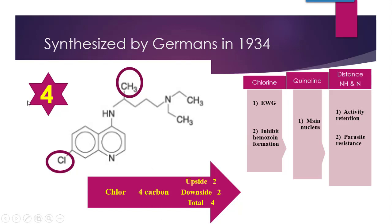The 4-carbon distance is between the tertiary nitrogen and the 4-aminoquinoline nitrogen. Also, for the diethylamino group: upside (one ethyl, C2H5) has 2 carbons, downside (other ethyl, C2H5) has 2 carbons — total 4. So all three features link to the number 4: 4-aminoquinoline class (chloro at 7th), 4-carbon chain, and 2+2=4 carbons in the diethyl group. This makes the structure of chloroquine easy to remember.